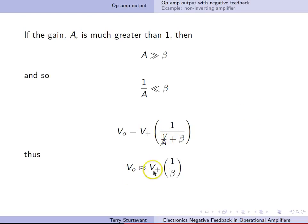So we get that the output voltage is the non-inverting input times 1 over beta. So the output depends only on beta, the feedback factor.